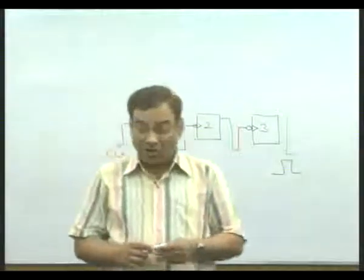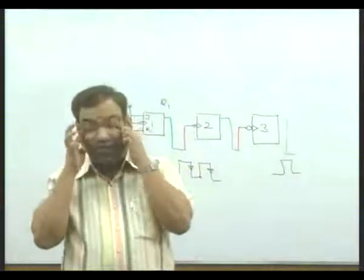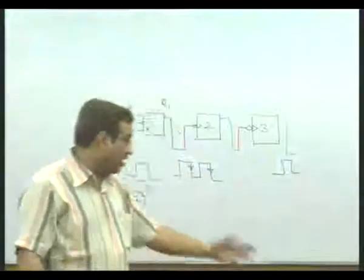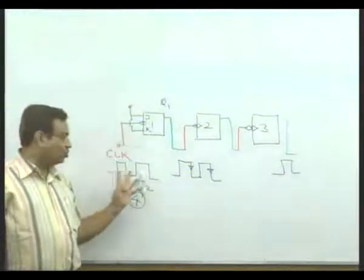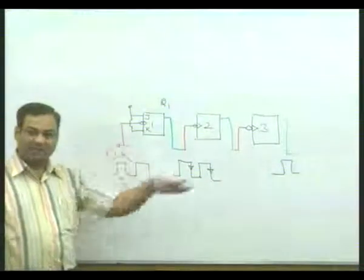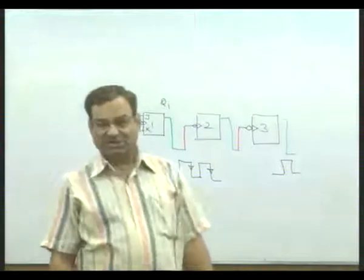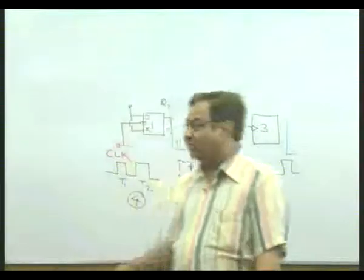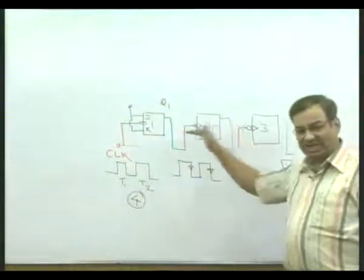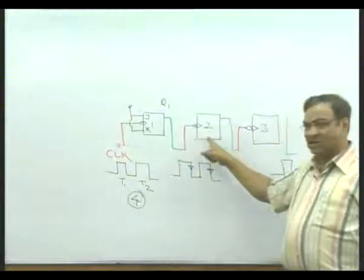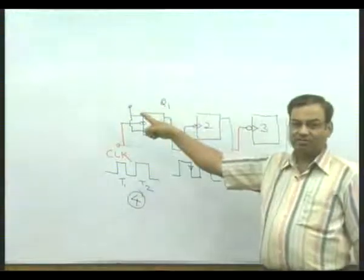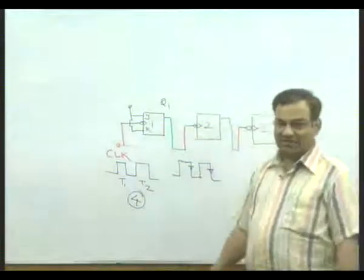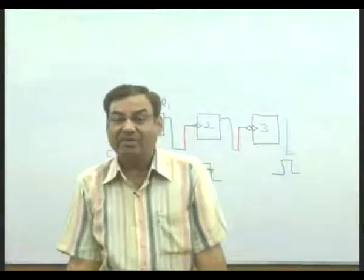What is happening here? The clock connected to the input of the JK flip-flop is getting divided by two every time. Two clocks generated one; four clocks generated two. That is why counters are also referred to as divide-by circuits. One flip-flop divides the clock count by two. Connecting two flip-flops in series gives an overall divide-by-four; three flip-flops gives divide-by-eight; four flip-flops gives divide-by-sixteen.